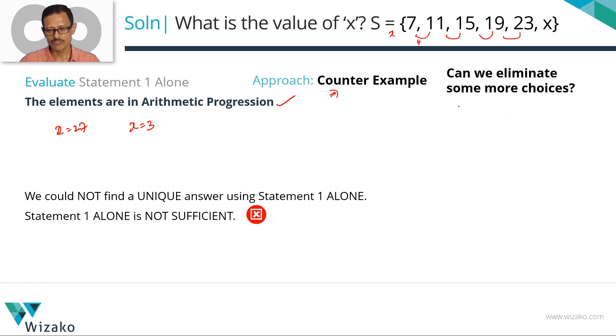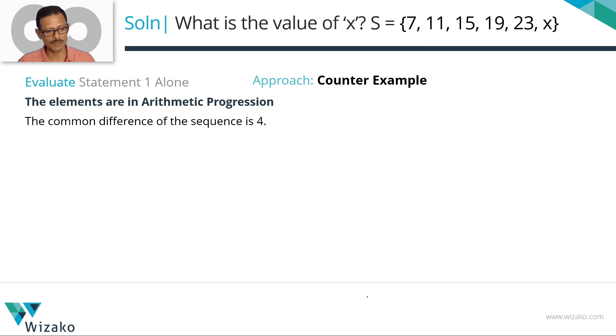1 alone is not sufficient. Let's eliminate few answer choices. If 1 alone is not sufficient, eliminate A and D. You can do this closing your eyes. A says statement 1 alone is sufficient. Obviously, it is not sufficient. D says each element is independently sufficient. If 1 alone is not sufficient, each of the statements independently can never be sufficient. What are we then down to? We are down to choices B, C, or E. Let's summarize till this point in the next slide and then move on to evaluating statement 2 alone.